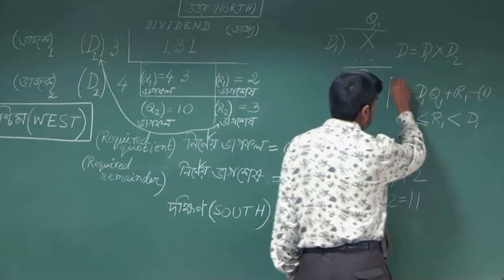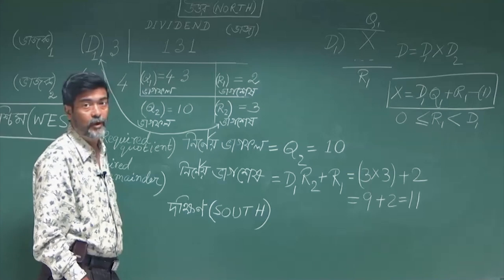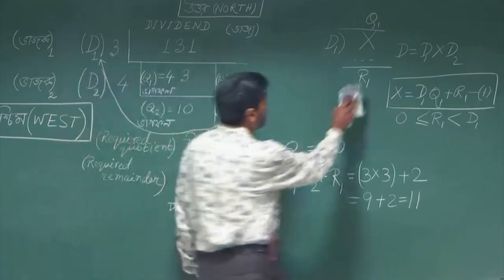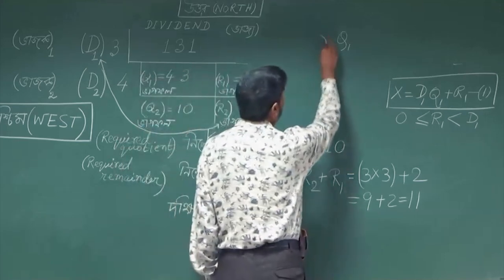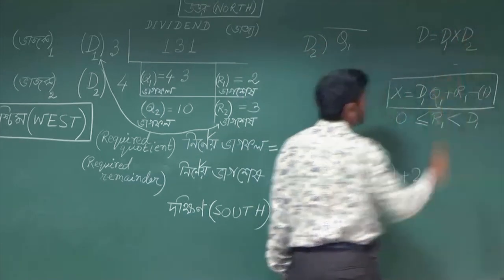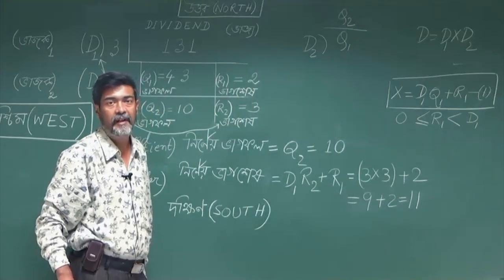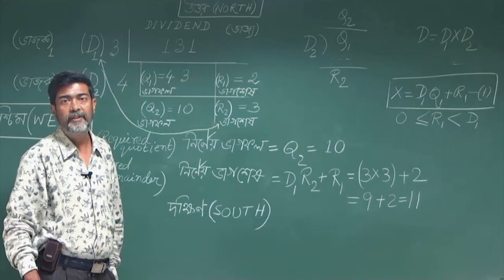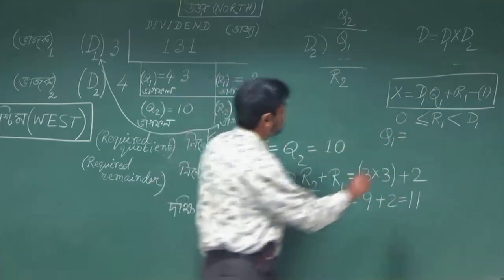Now we will use equation 1 for the second division. The quotient thus obtained, q1, is to be divided by the second divisor d2. Here q1 is the new dividend. Suppose the quotient is q2 and the remainder is r2. By using the similar algorithm, we have q1 is equal to d2 into q2 plus r2 — call it equation 2.